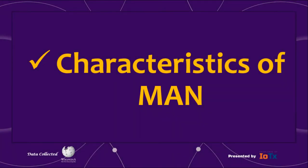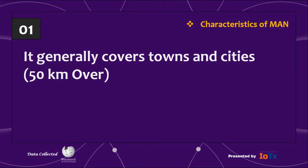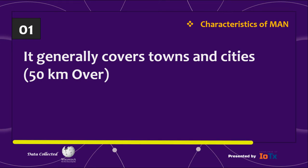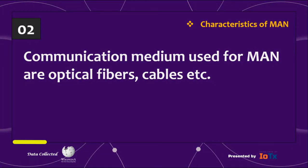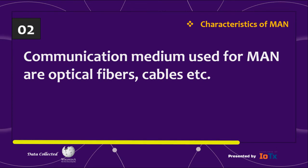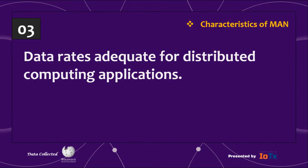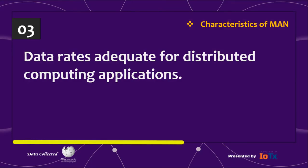Now we see the characteristics of MAN. Number 1, it generally covers towns and cities over 50 kilometers. Number 2, communication mediums used for MAN are optical fibers, cables, etc. Number 3, data rates adequate for distributed computing applications.